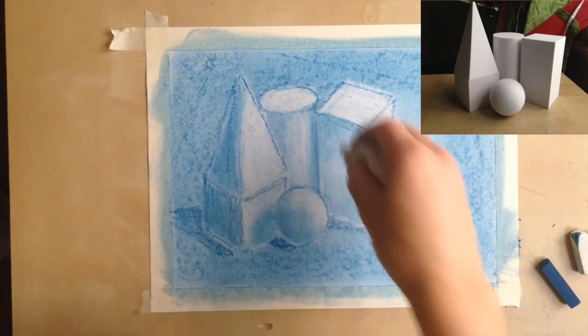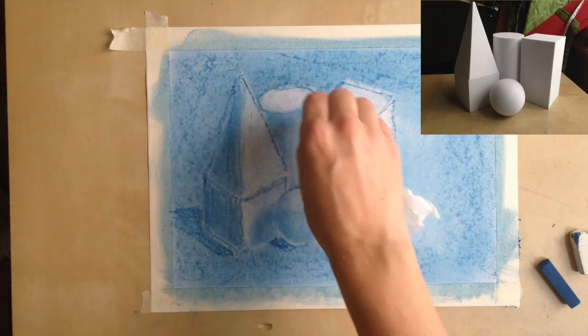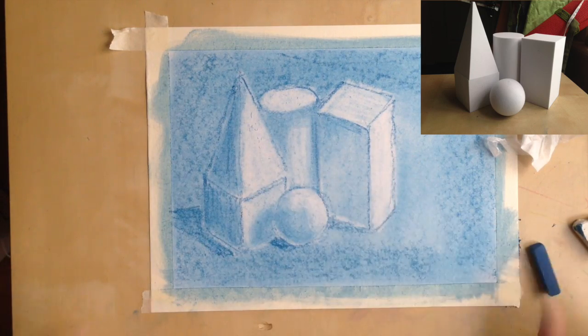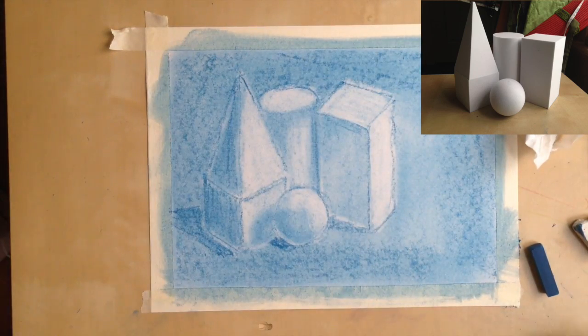Remember when you smear it, it's going to smudge out some of our lines. So we're going to have to come back in and fix some of those. We're going to fix some with our eraser. We're going to fix some with our chalk. I would do the eraser first and the chalk next.